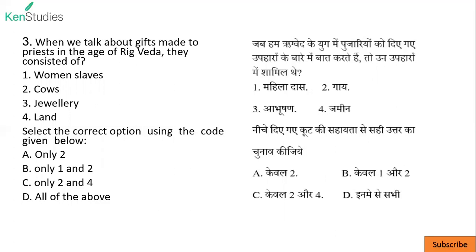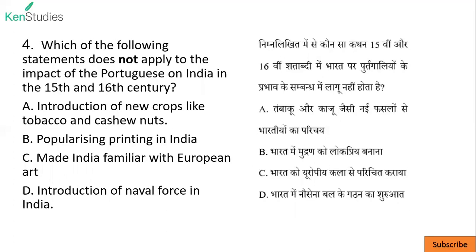Land ka tab bahut zyada matlab nahi hota tha — mainly cows. Maximum cheezein gaay pe hi nishchit thi. So only options one and two — B will be the answer. Next.